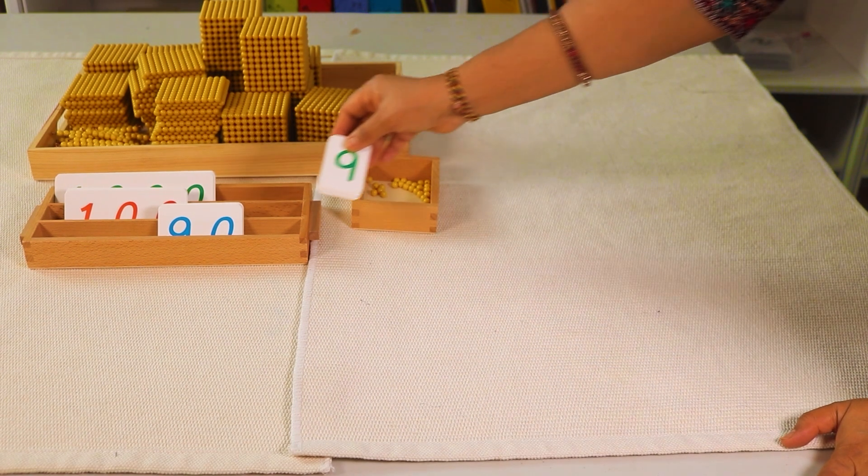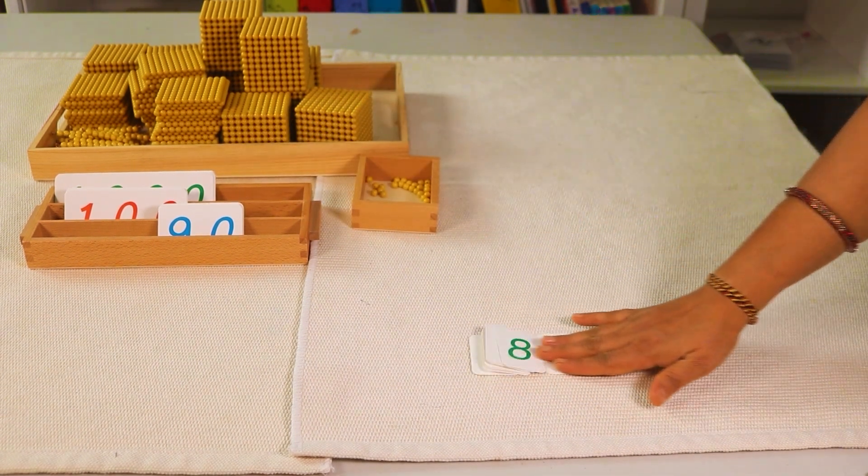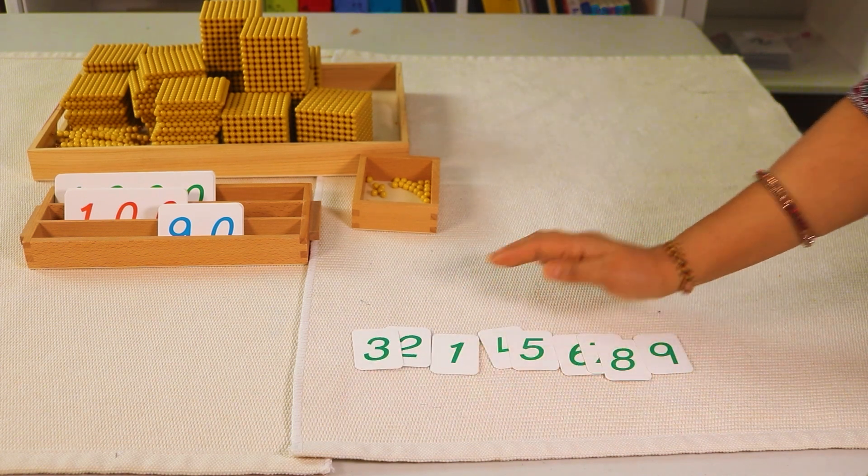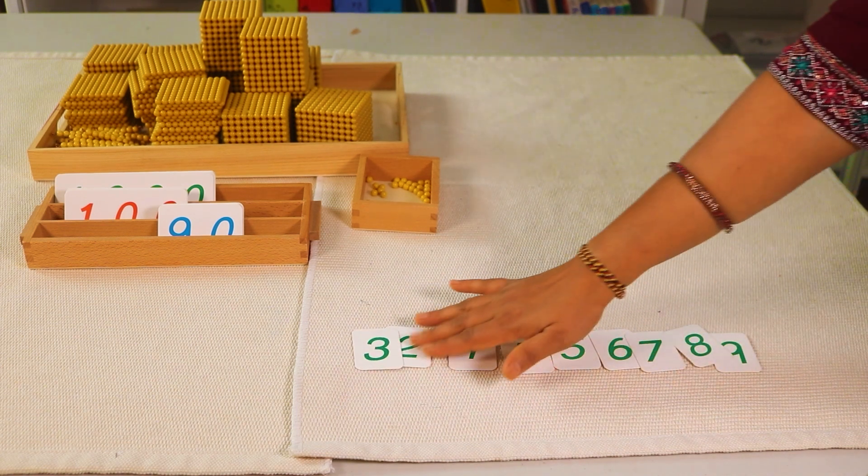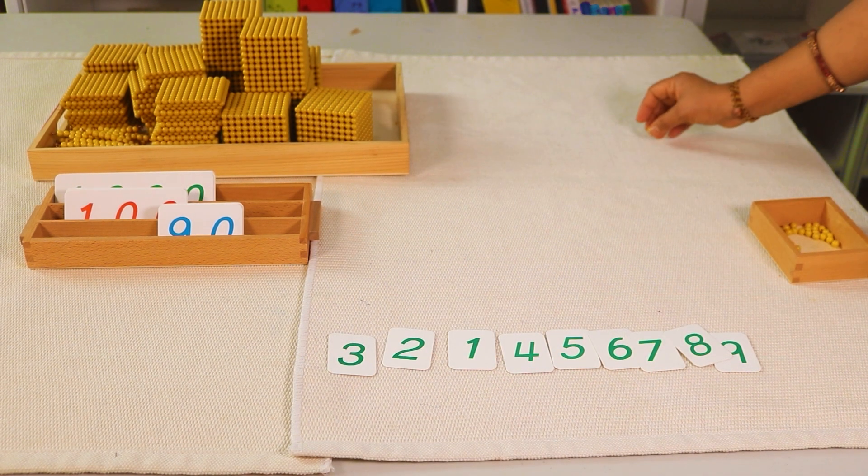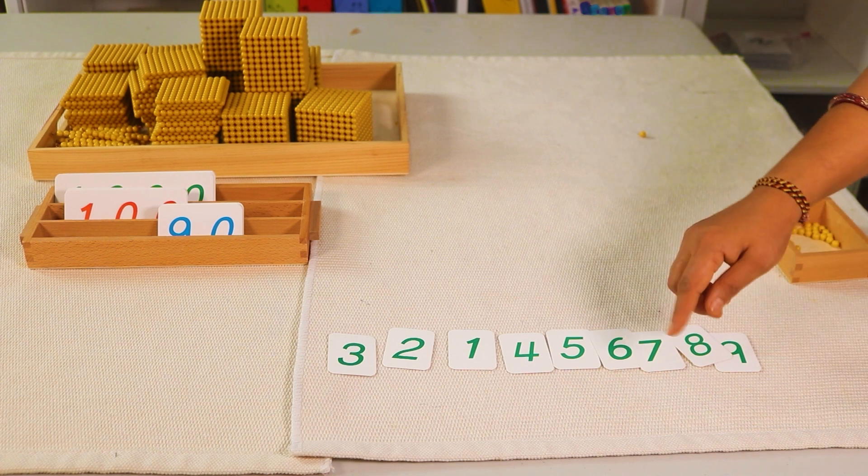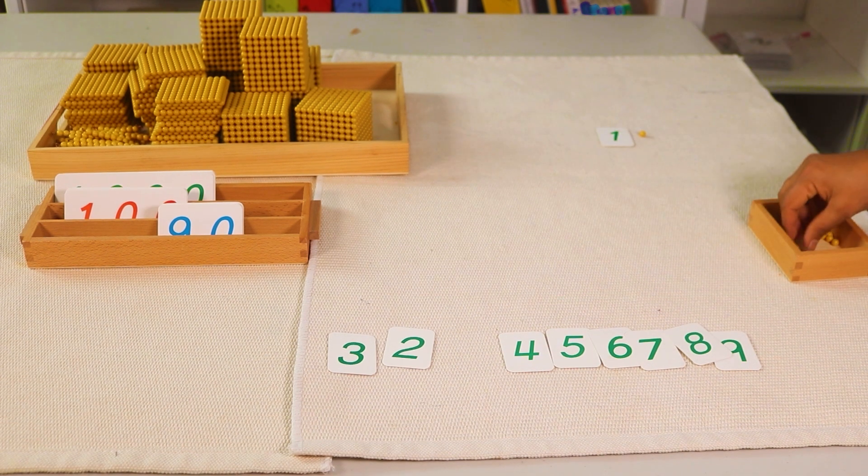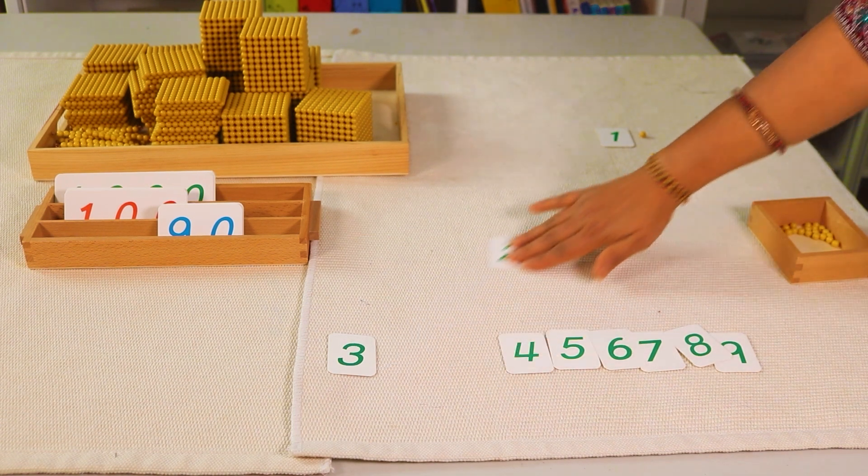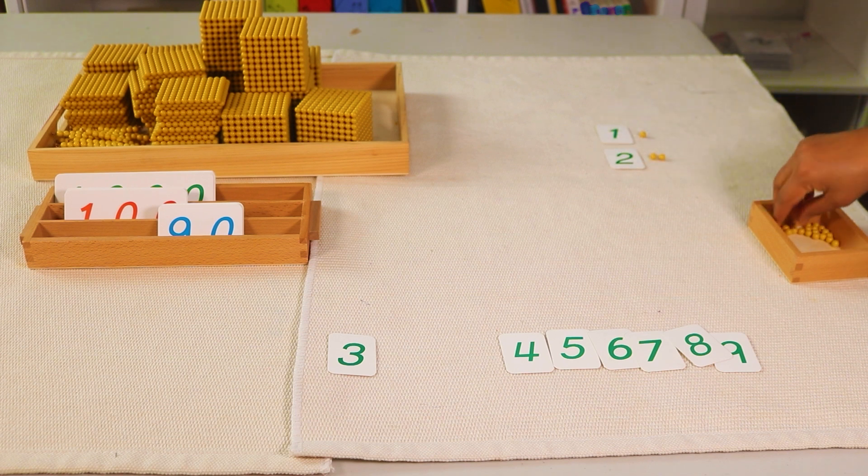Let's get started with the 45 card layout lesson. We'll start with the unit cards in random fashion. We'll start with the quantities first. This is one, so where is one? This is two, so you have to take two beads. Now take three beads: one, two, three.